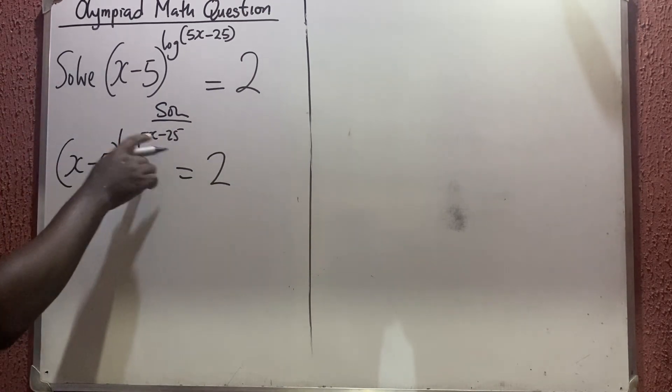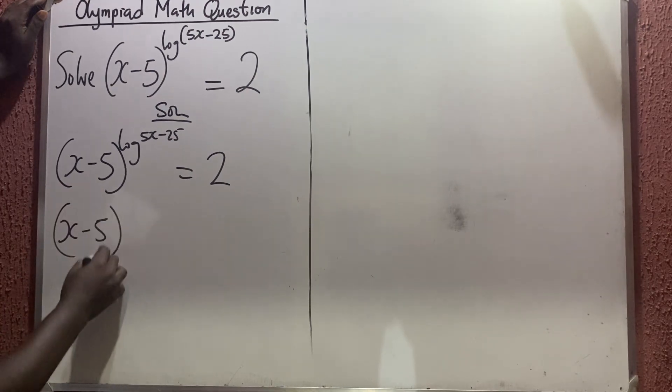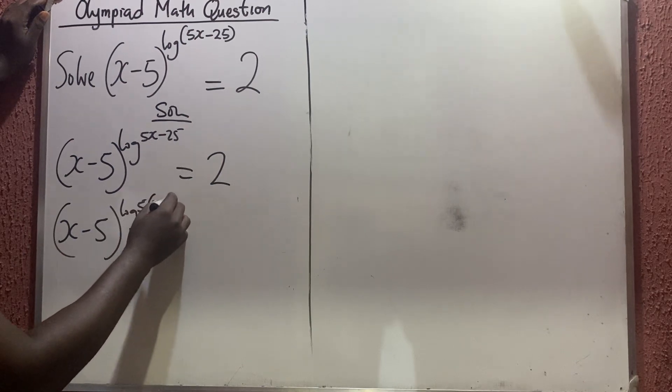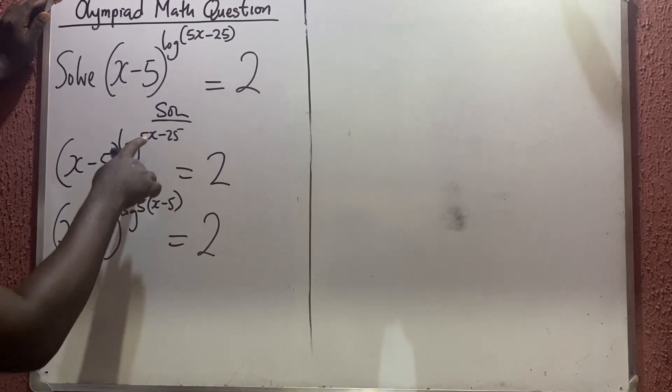Let us factorize this. I'm having (x-5) to the power log 5 times (x-5) equals 2. The five times this will give you this, five times this will give you this.